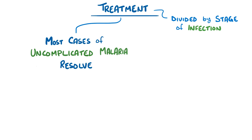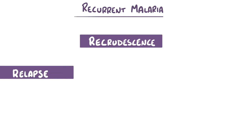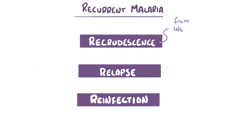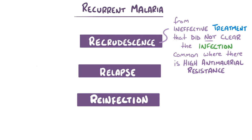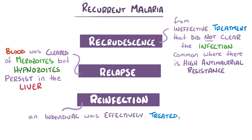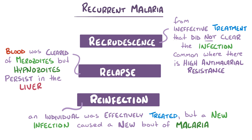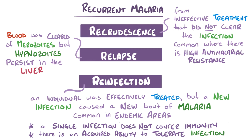For the most part, cases of uncomplicated malaria resolve with treatment. Even after recovery, some individuals can get symptoms after a period of time — this is called recurrent malaria, and it's broadly divided into three underlying causes: recrudescence, relapse, and reinfection. Recrudescence refers to ineffective treatment that didn't completely clear the infection, a problem common when there are high rates of anti-malarial resistance. Relapse refers to situations where the blood was cleared of merozoites but hypnozoites persisted in the liver and then emerged to cause more problems. Reinfection is when an individual was effectively treated but a completely new infection caused a new bout of malaria, a problem common in endemic areas since a single infection doesn't make a person immune. Instead, there's an acquired ability to tolerate plasmodium infections, which relates to the degree of exposure to a variety of different strains.